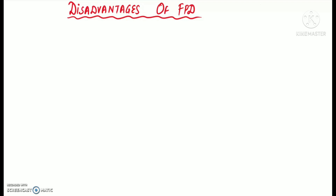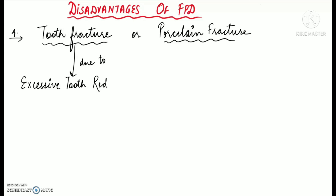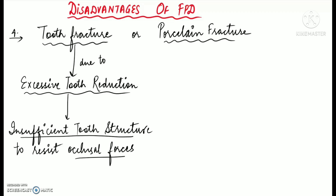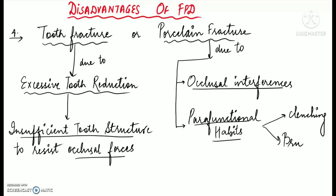Tooth fracture or porcelain fracture can occur due to poor techniques during tooth preparation. Tooth fracture can occur because of excessive tooth reduction, leaving insufficient tooth structure to resist occlusal forces. Porcelain fracture can also occur due to the presence of occlusal interferences or parafunctional habits involving heavy occlusal forces such as clenching and bruxism.